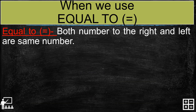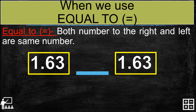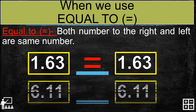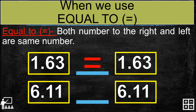When we use equal to, we use it if both the number to the right and left are the same number. So you have here both numbers are 1 and 63 hundredths, so we are going to use the equal to symbol. Next, 6 and 11 hundredths on the right and also 6 and 11 hundredths on the left — they are the same, so we put the equal to symbol.